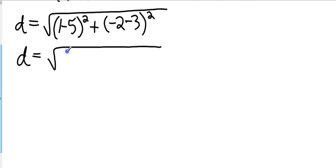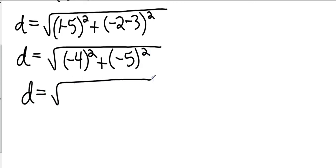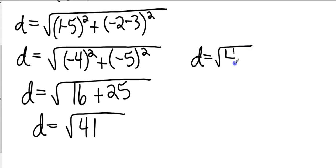Okay. 1 minus 5 is negative 4. Negative 2 minus 3 is negative 5. So that's going to give me the square root of 16 plus 25, which is the square root of 41. Okay, so your distance is actually the square root of 41.